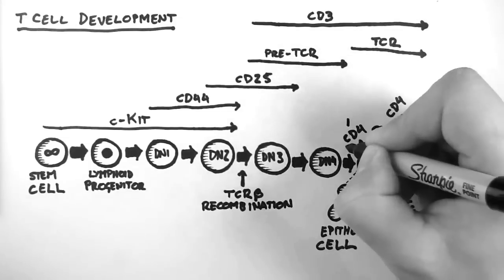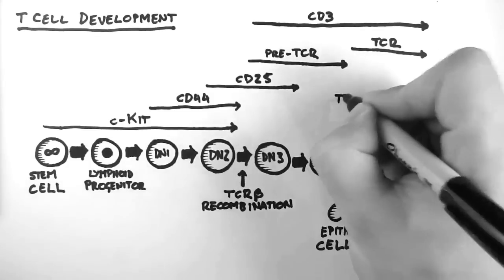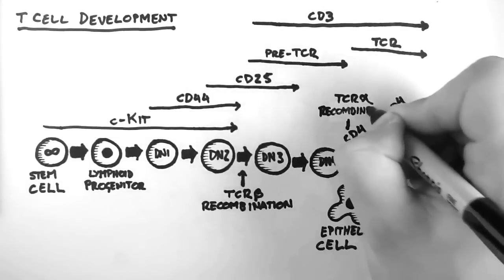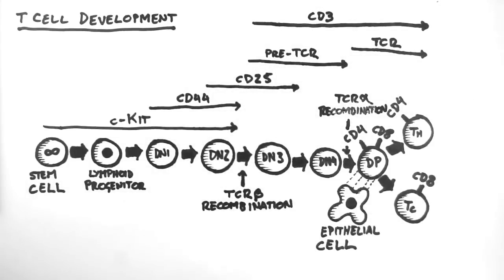The other less important component is called the pre-TCR alpha chain. This shouldn't be confused with the actual TCR alpha chain, which is recombined and then expressed between the double negative 4 cell and the double positive cell. Once the TCR alpha chain is expressed, it can combine with the TCR beta chain to form the T cell receptor.